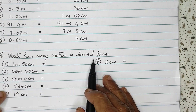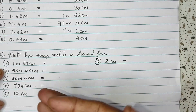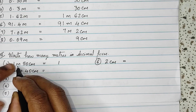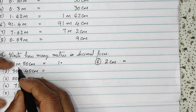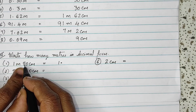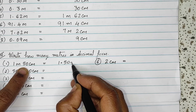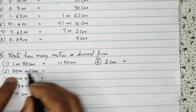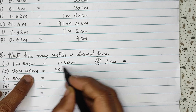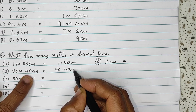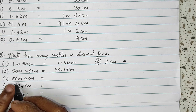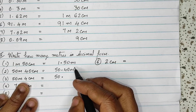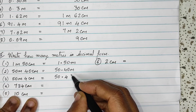Now, write how many meters in decimal form — we have to write this in reverse. 1 meter and 50 centimeters — we show the meters as the whole number and 50 centimeters after the decimal, so 1.50 meters. Same with 50 meters and 40 centimeters — that means 50.40 meters. And 50 meters and 4 centimeters is the same as 50.04 meters.